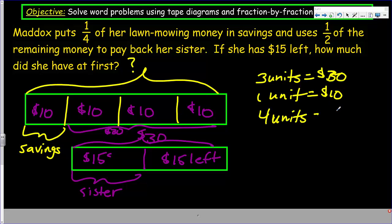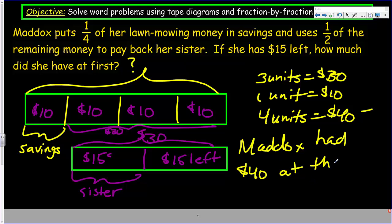That ends the problem. So Maddox had $40 at the beginning, or in this case, $40 from mowing. She earned $40 from her mowing. So this would have been $40. Maddox, I hear, is quite the mower, too. She'll clip that grass, perfect height, exactly what you're looking for.